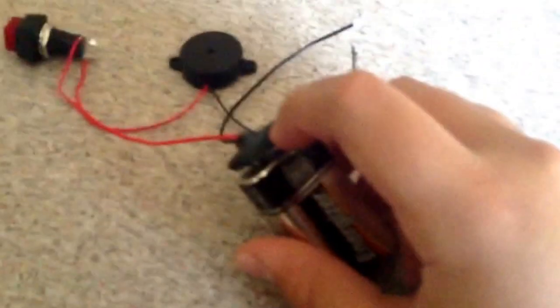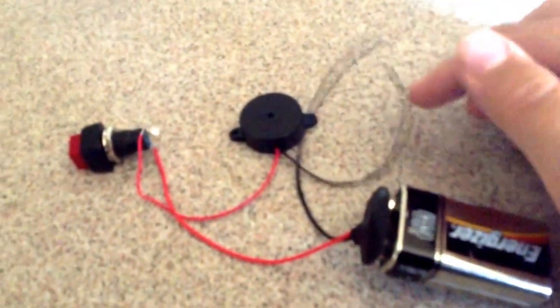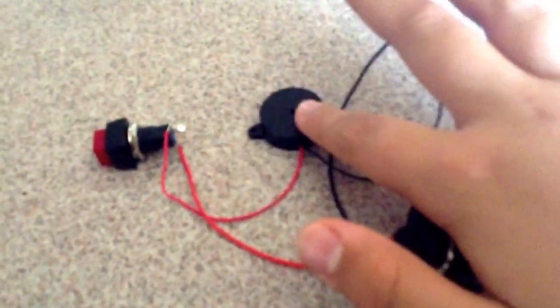So I have a 9-volt battery clip right here and the 9-volt battery is hooked up. What I've done with the positive is I've gone ahead and soldered this to the positive side of the buzzer.